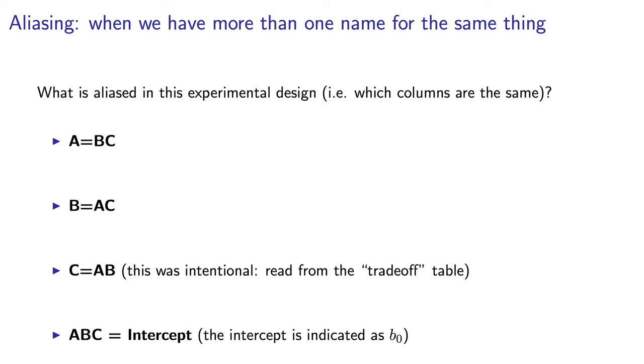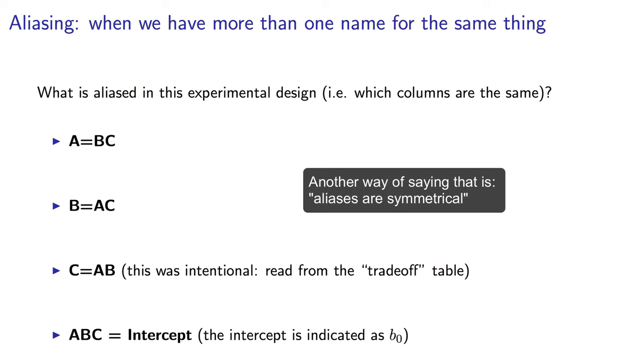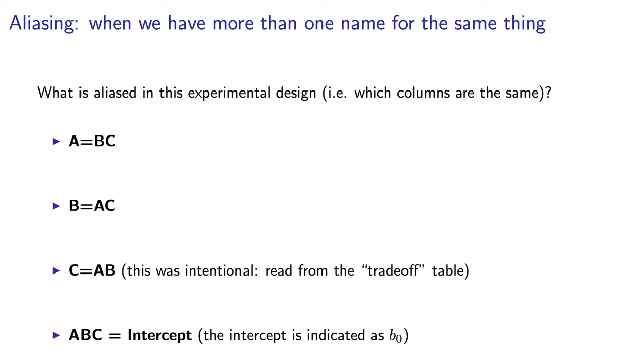Confounded is a word that means confused. It means the effect of A is confused, or mixed up with, or confounded, with the BC interaction. We cannot tell them apart. A is an alias for BC, and BC is an alias for A. That's the price we pay for doing half the experiments. And in some cases, it is a price that is worth paying.